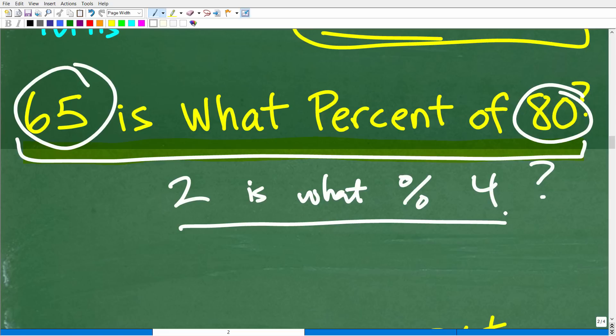So when you're confused about a math problem, replace those numbers with easier numbers so you can think about the steps that you need to do to solve the problem. So two is what percent of four?